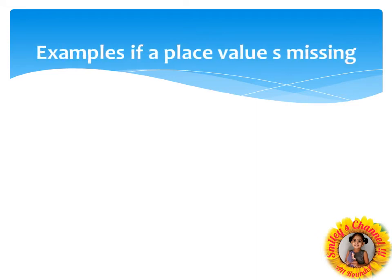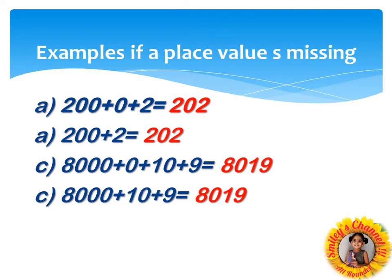Now we are discussing the second point, children. Did you remember what it is? If any place value is missing in the expanded form, how do you write the short form of that particular number? Here, look at 200 plus 0 plus 2. This is the 1's place, this is the 10's place, and this is the 100's place. We have 3 digits, so: 1's, 10's, 100's. You can follow the first method — leftmost initial digit — giving 202.